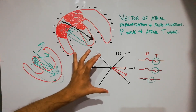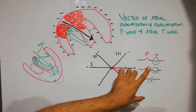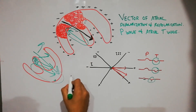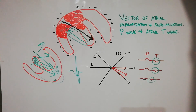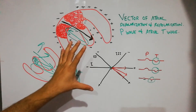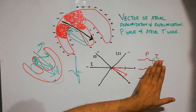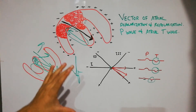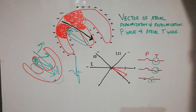Considering why the atrial T wave is not basically seen on ECG: it is because the time at which the atrial T wave appears, the ventricular QRS complex is being recorded. So the atrial T wave gets mixed in and is not shown on the normal ECG strip. Sometimes in abnormal conditions the atrial T wave, or repolarization wave of the atria, can be seen on the ECG paper, but normally it is not seen because it occurs at a time when the QRS complex is occurring.